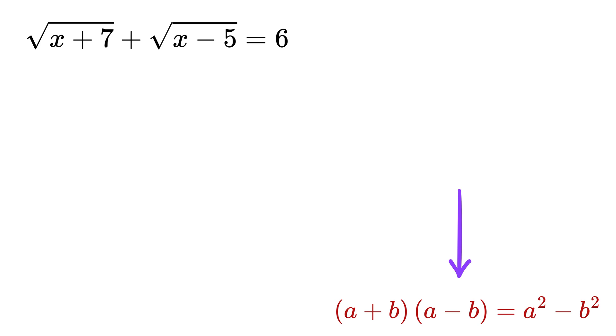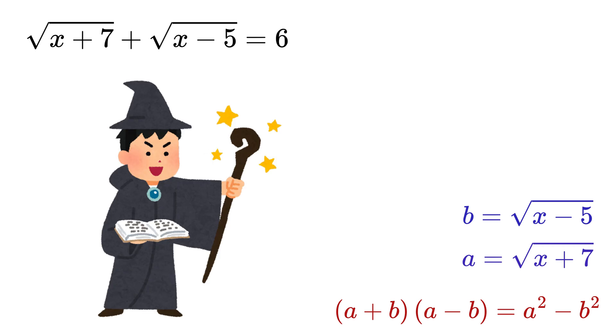We all know this identity: (a + b)(a - b) is a² minus b², right? So what if you take a as √(x+7) and then take b as √(x-5)? Here comes the magic.